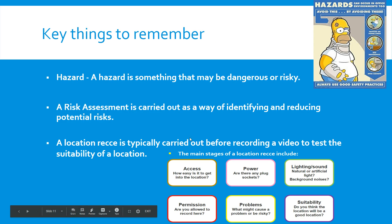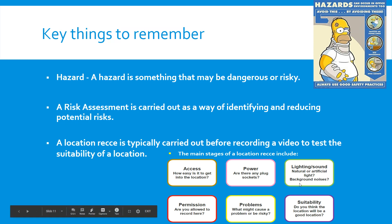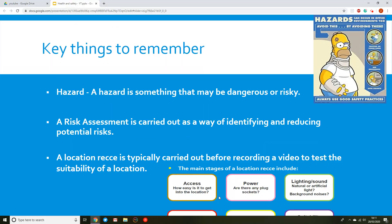To summarise: a hazard is something that may be dangerous or risky. A risk assessment is carried out to identify and reduce potential risks. A location recce is typically carried out before recording video, and checks whether the location has good access, power, natural light, background noise issues, suitability, problems, and whether permission to film has been obtained.